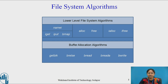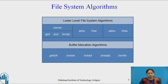These algorithms we already studied in the last chapter. Now in this chapter we are going to see the lower level file system algorithms: namei, iget, iput, bmap, alloc, free, ialloc, and ifree. All these algorithms are related to files. The namei algorithm is used to convert the path name into an inode using algorithms iget, iput, and bmap. The iget and iput algorithms are used to allocate and release the inode to and from the file. The bmap algorithm is used to read the content from that file. Alloc and free algorithms are used to allocate and free the disk block for the file, while ialloc and ifree algorithms are used to allocate an inode to a newly created file and free that inode. So all these algorithms are related to the file system.